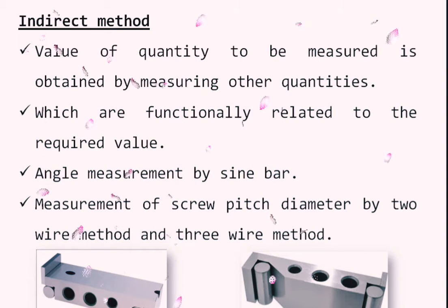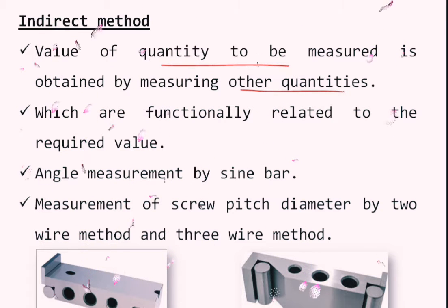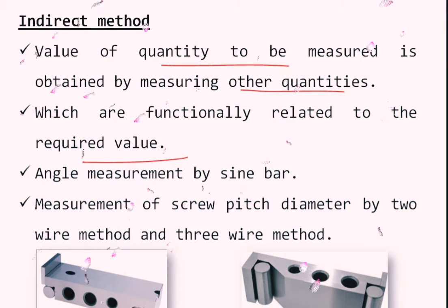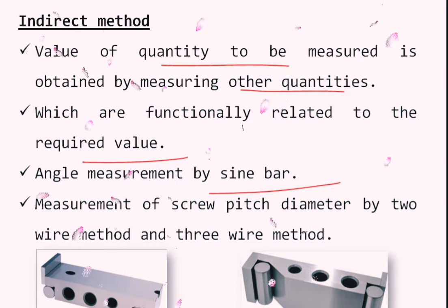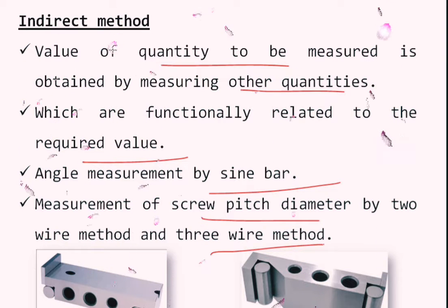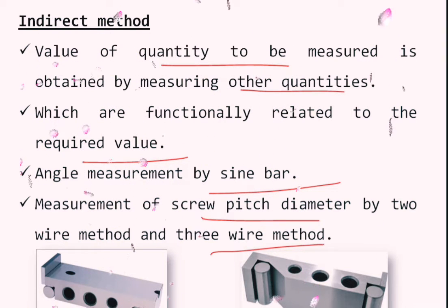The indirect method: here the value of the quantity to be measured is obtained by measuring other quantities. For example, to measure the angle of a component using a sine bar, you need slip gauges — without slip gauges it is not possible. Measurement of screw pitch diameter by two-wire or three-wire methods also requires calculations and additional accessories. Indirect methods are a little more complicated compared to the direct method.